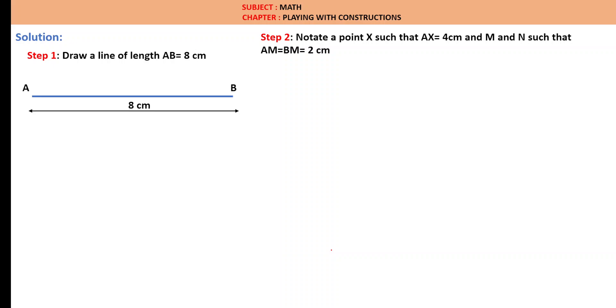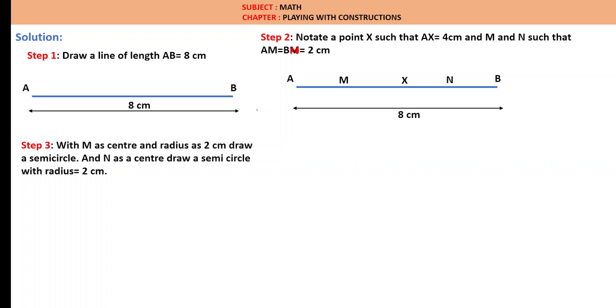Now, take point X such that AX is equal to 4 cm and M such that AM is equal to 2 cm. BN is equal to 2 cm. With M as a center and radius as 2 cm, draw a semicircle and N as a center, draw a semicircle with radius equal to 2 cm. We are drawing with M as a center, this radius equal to 2 cm. We are drawing a semicircle. Again, with N as a center, we are drawing the semicircle down.